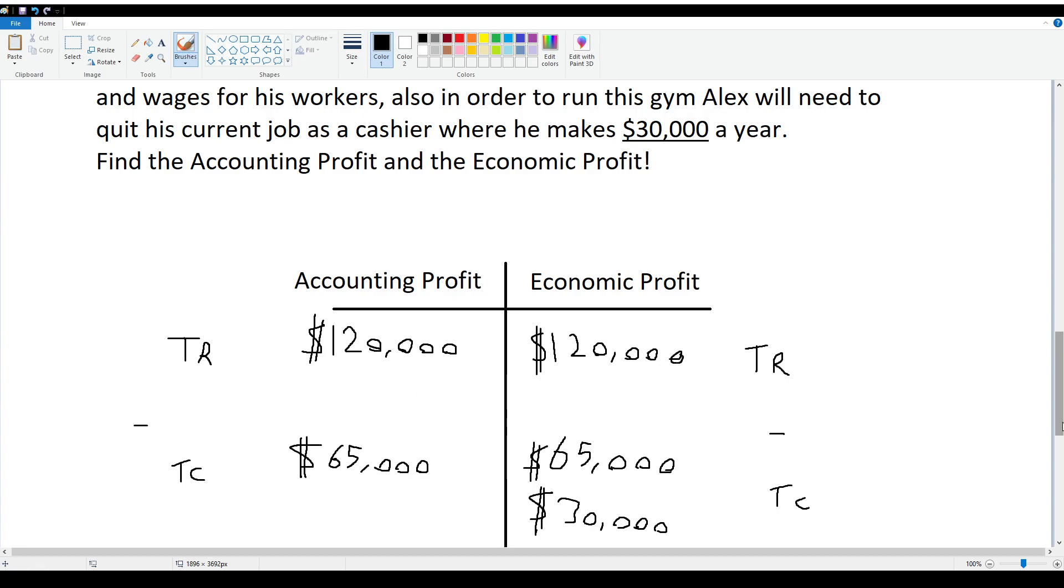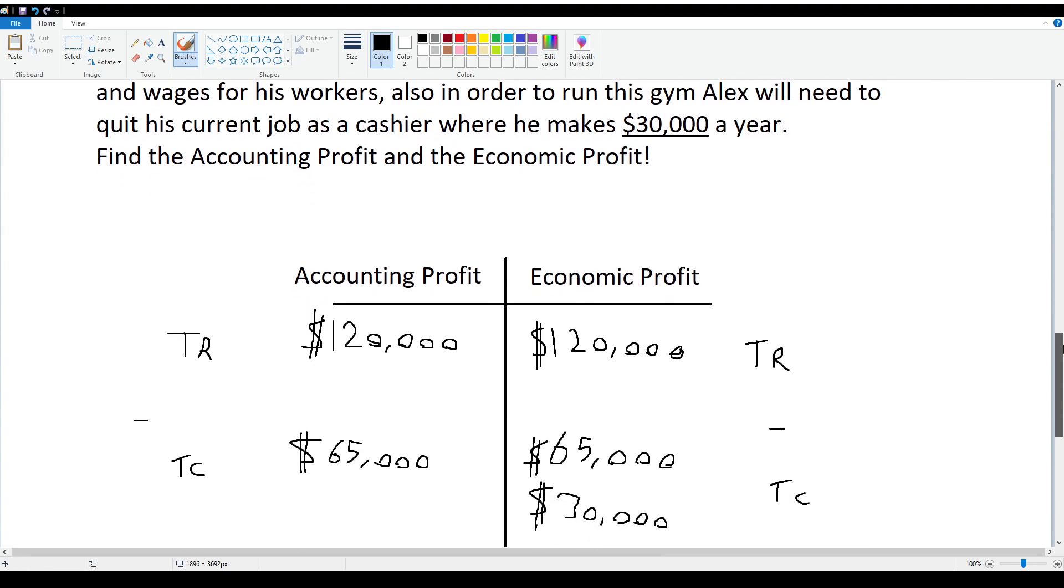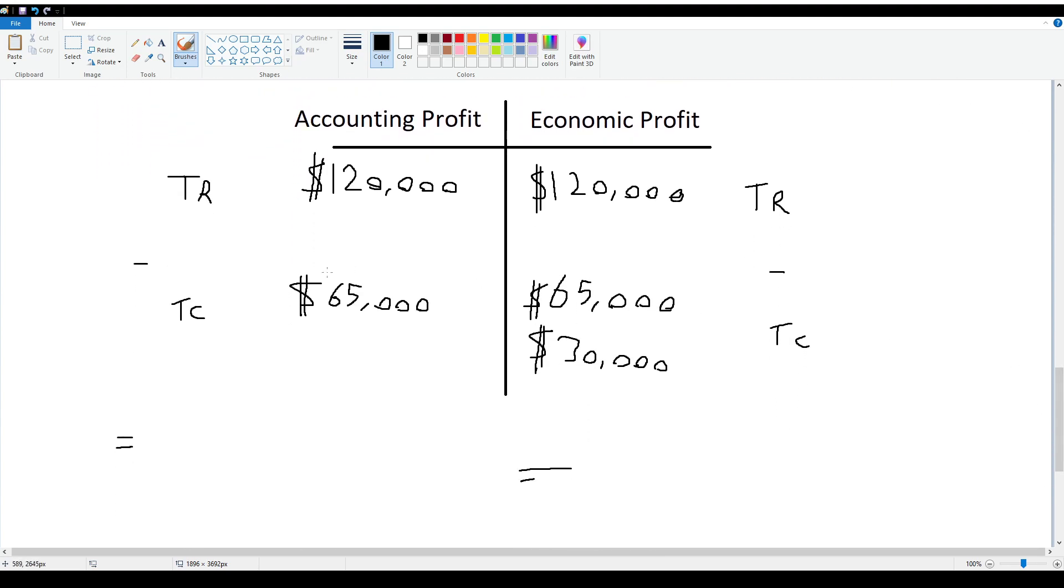Now what would be different would be the total cost. Like I mentioned earlier, the accounting profit only looks at the explicit cost, and it is noted in here that it will be $65,000 a year to cover rent, utilities, etc. And if we do that, the accounting profit would be about $55,000.